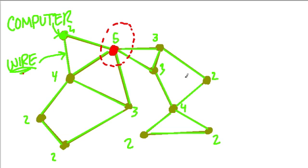If this computer were to suddenly disappear, how could I get from these vertices to these over here? There's no other bridge between them except for this computer right here.